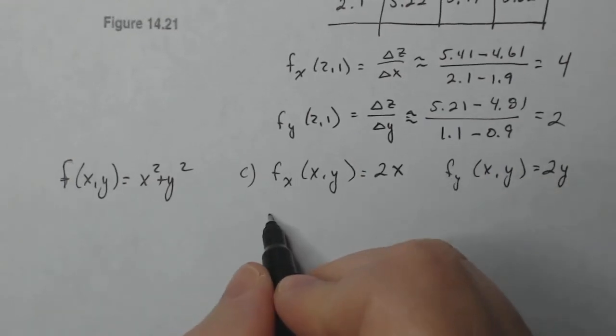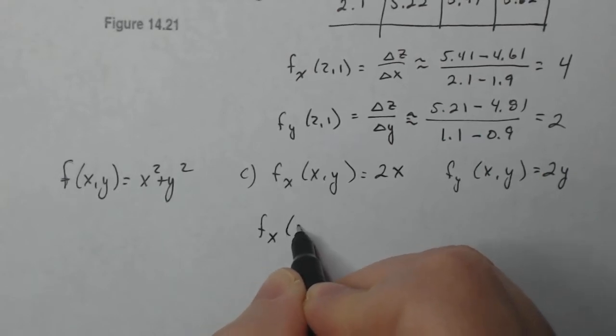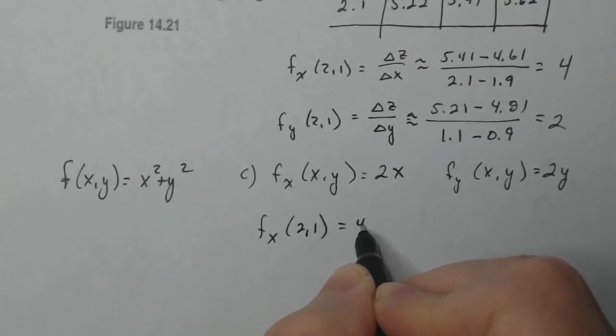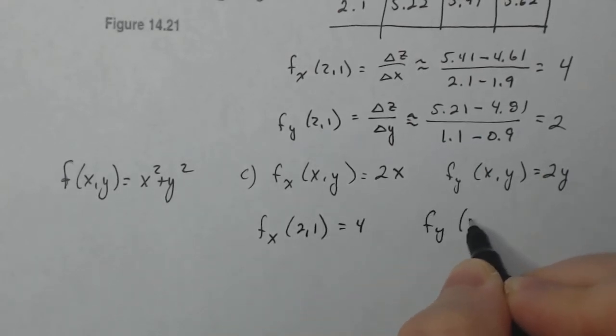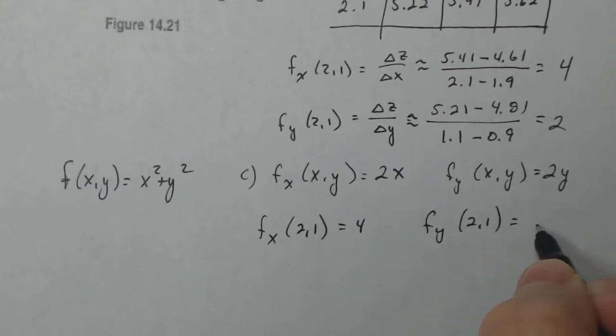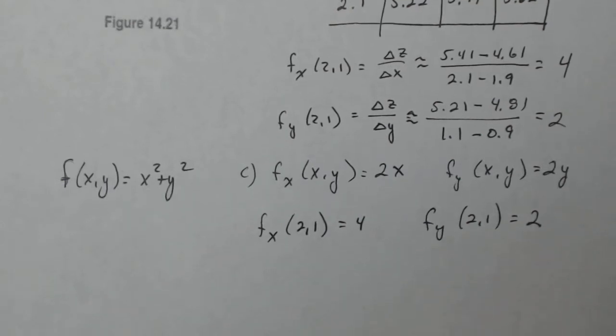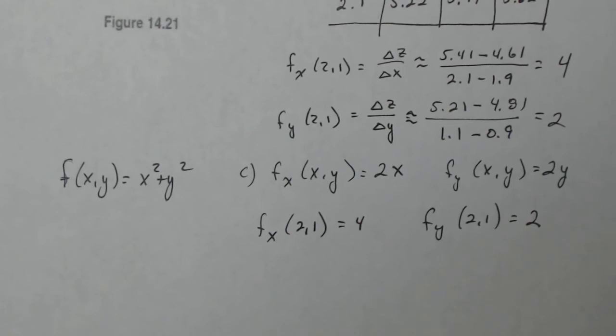If I want to do then the derivative at a point, I just plug in two one, which gives me four. And here I plug in two one and that gives me two. So it looks like the table was really accurate. I got the exact same values, but for the contour I got three in this case. So that was off a little bit. I mean, I could have been slightly more exact, but it turned out okay. Estimates are hard and they're different, so you just do your best with what you have.